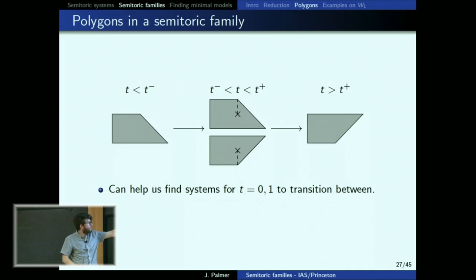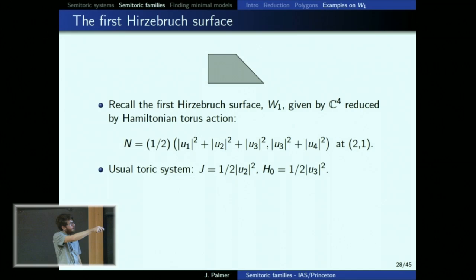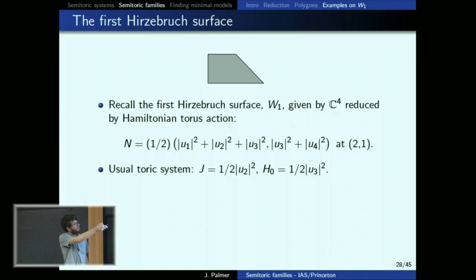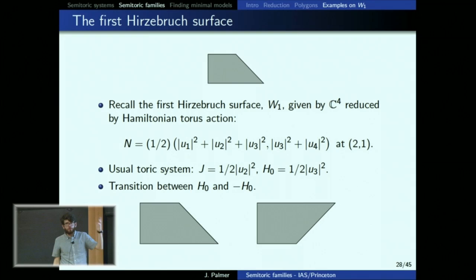The idea: I want a system with certain polygons as its semi-toric invariant. I write down a system with the first polygon and one with the other polygon and try to figure out a transition between them. Looking at these polygons, the one at t=0 corresponds to the Hirzebruch surface, which we can write as C^4 mod a symplectic quotient by a torus action using Delzant's classification. This gives coordinates U_1 to U_4 from C^4. The usual toric system has J and H_0 giving this polygon as its image — H_0 is where we start for our transition family.